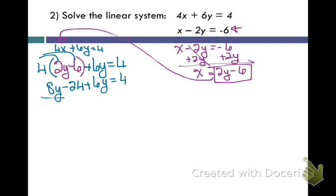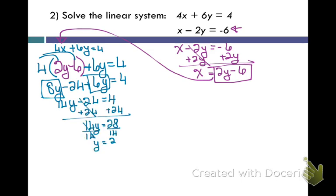So, I get 8y minus 24 plus 6y equals 4. Now, I'm going to combine like terms. And I get 14y minus 24 equals 4. And now, this is a two-step equation you know how to solve. Now, remember, your answer to a system of equation is an ordered pair. So, I think up here, I'm going to go ahead and start my ordered pair. I know my y value now. It is 2.